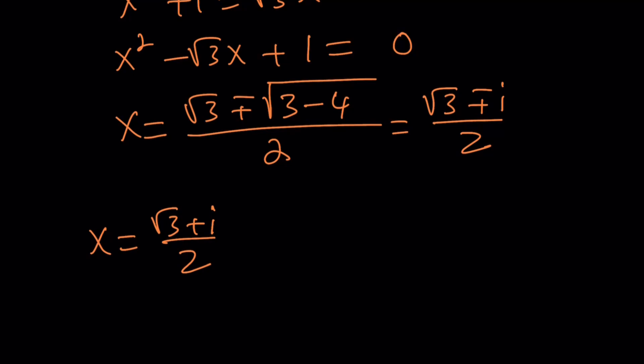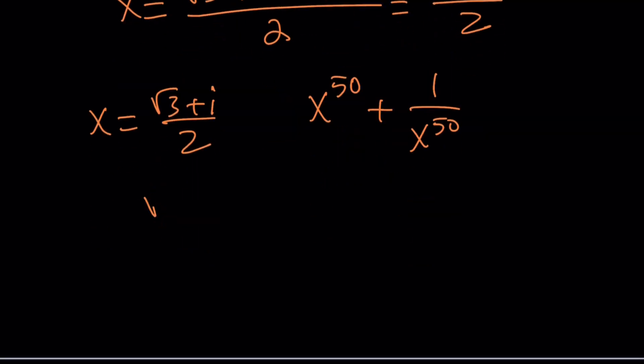Let's go ahead and plug this in. I'm supposed to evaluate x to the 50th power. Now here's the challenge. If you raise this to the 50th power, root 3 plus i over 2 to the 50th power, you're going to run into some difficulties. You're going to have 51 terms using the binomial theorem. So there must be an easier way to do it, and there is.